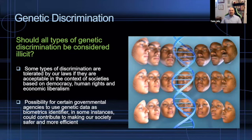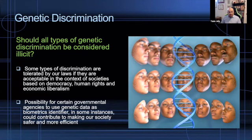Should we prevent all types of genetic discrimination? Should we, is there a distinction to make? Some types of discrimination are tolerated by our laws if they're acceptable in the context of societies based on democracy, human rights, and economic liberalism.